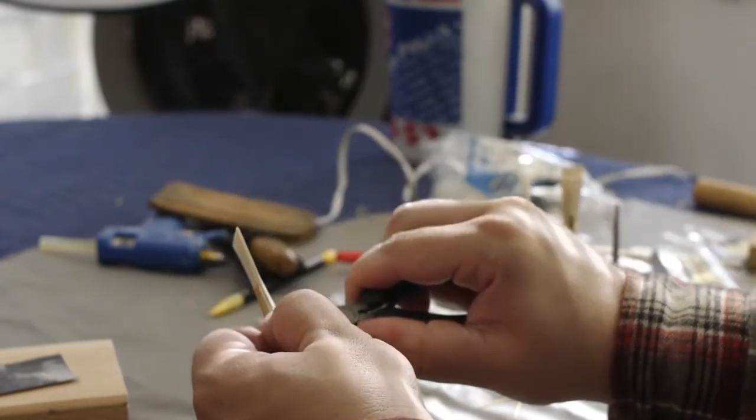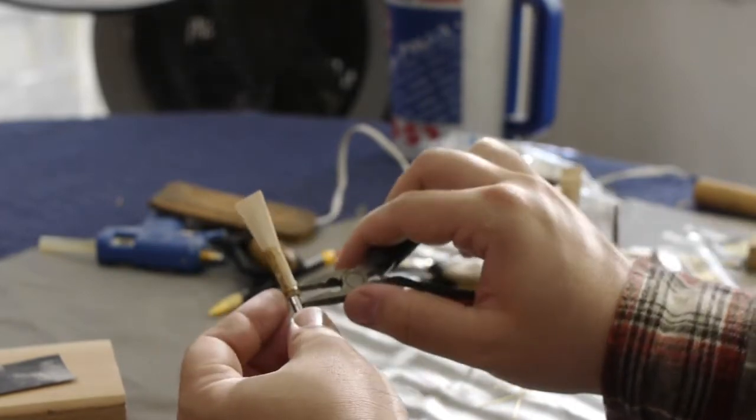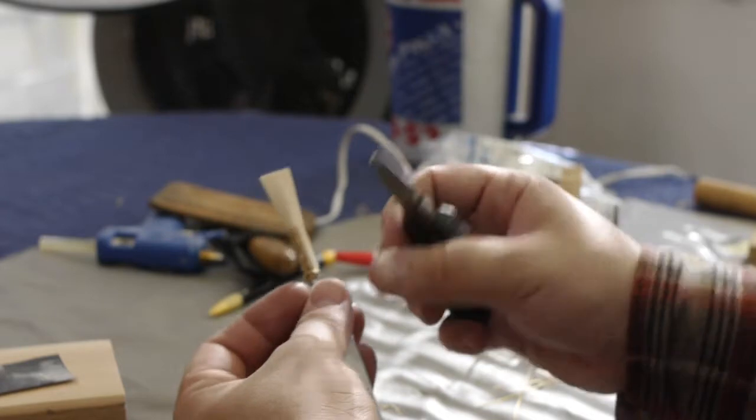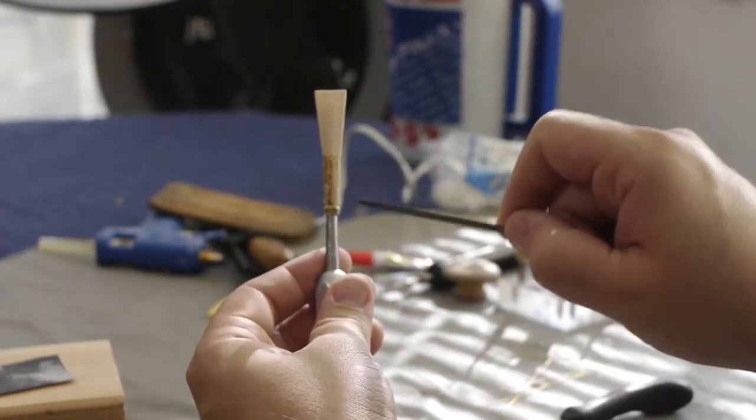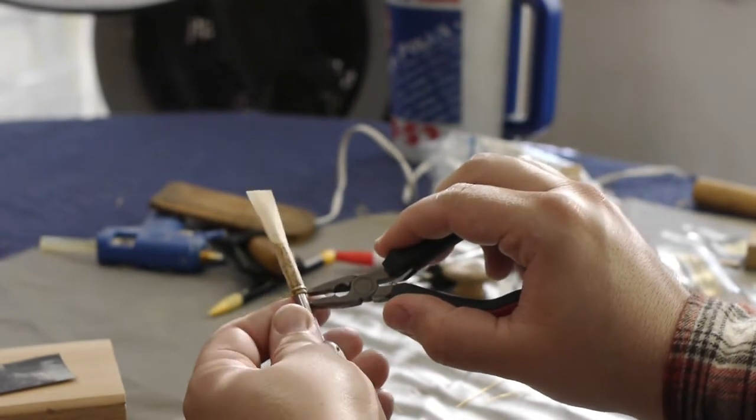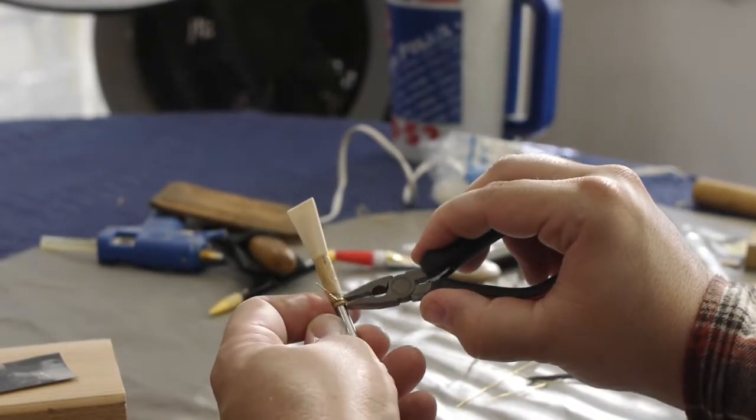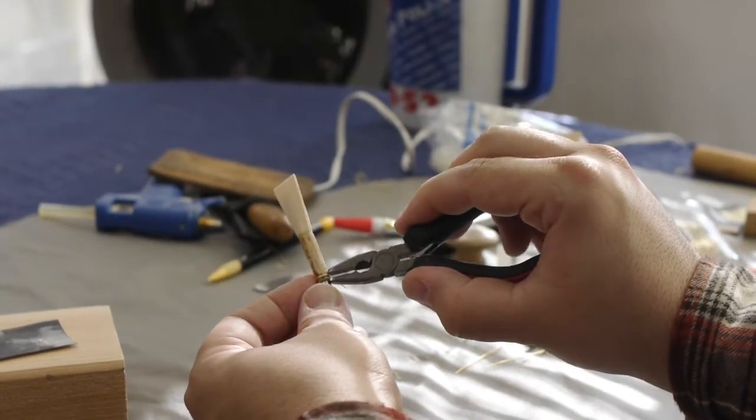As you can see it looks a little bit crooked, so I want to straighten that out. I'm actually going to just use my pliers to inch it even closer to the bottom. I really don't want to have more than a sixteenth of an inch of cane below.